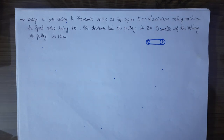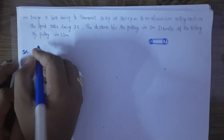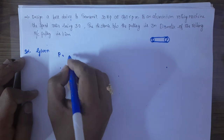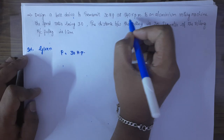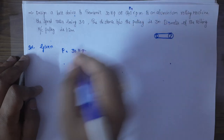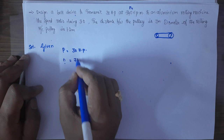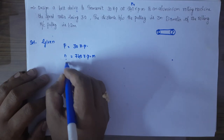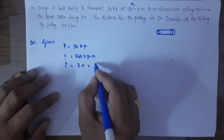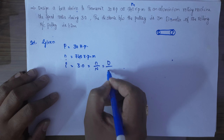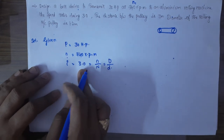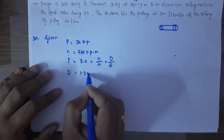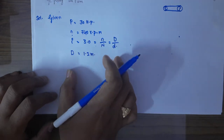The given data is: rated power = 30 horsepower, pulley speed n = 740 rpm, speed ratio i = 3.0 (which is N/n or D/d), and diameter of the rolling machine pulley D = 1.2 meters.